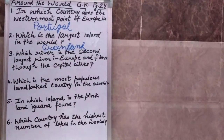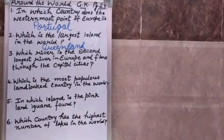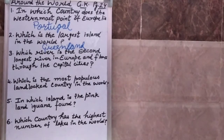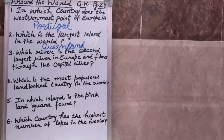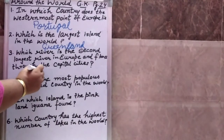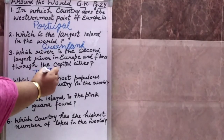Question number three: Which river is the second longest river in Europe and flows through the capital cities of Vienna, Bratislava, Budapest, and Belgrade? Kounsi nadi Europe ki sabse doosri sabse lambi nadi hai, jo Vienna, Bratislava, Budapest aur Belgrade ki raazdhaniyon ke madhya se behti hai? Your answer is the Danube.